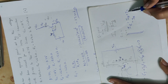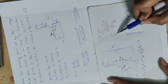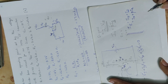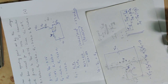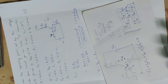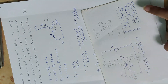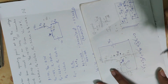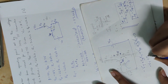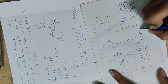IE is equal to IB plus IC. Since IC equals beta times IB, substituting gives IE equal to IB plus beta times IB. Taking IB common: IE equal to IB into 1 plus beta. With beta equal to 50, IE equals IB into 51. IB is the unknown to be solved.